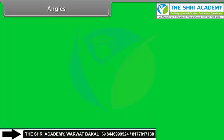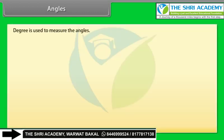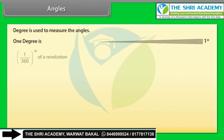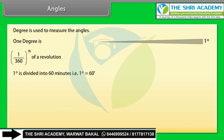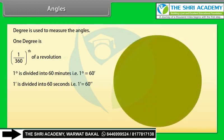How to measure the degree? Degree is used to measure angles. One degree is 1/360th of a revolution. One degree is divided into 60 minutes, and one minute is divided into 60 seconds. There are 360 degrees in one full rotation — one complete circle. A full circle is 360 degrees.